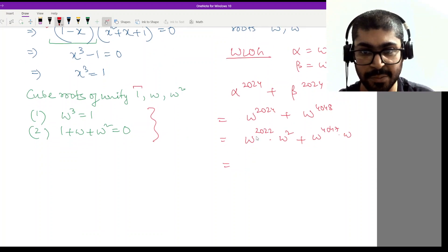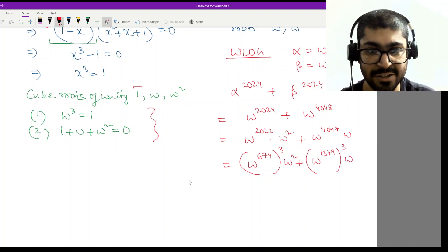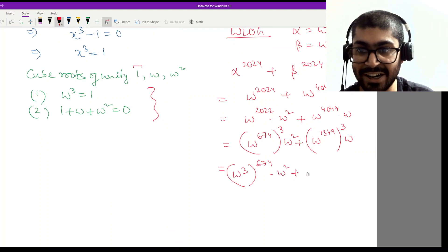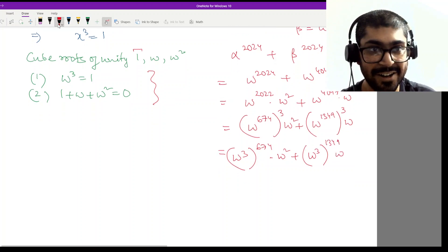So this is omega to the power 2022. So it'll be, if I divide by three, it'll be 674 cube into omega square plus if we divide this one by three, I'll have omega into 1349 cube into omega. Now we can interchange these powers. So what will I get? I'll have omega cube to the power 674 into omega square. This is a very detailed calculation I'm showing. You don't need to do it in this detail in the exam because it's a competitive exam, not a school exam. So after this, what will we get?